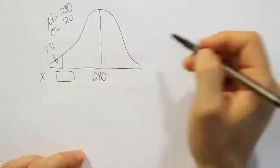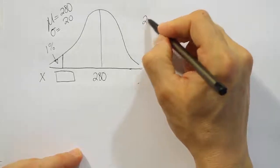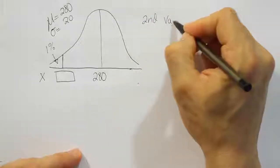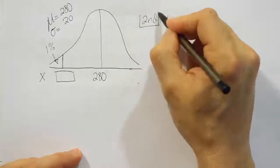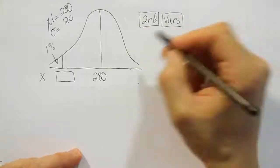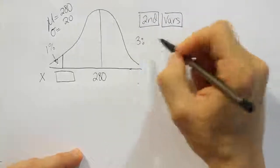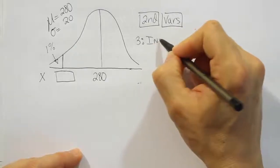So in order to do that we're going to have to use the inverse norm feature in our calculator. So press 2nd in your calculator, then the button VARS. Then you're going to take option number 3.